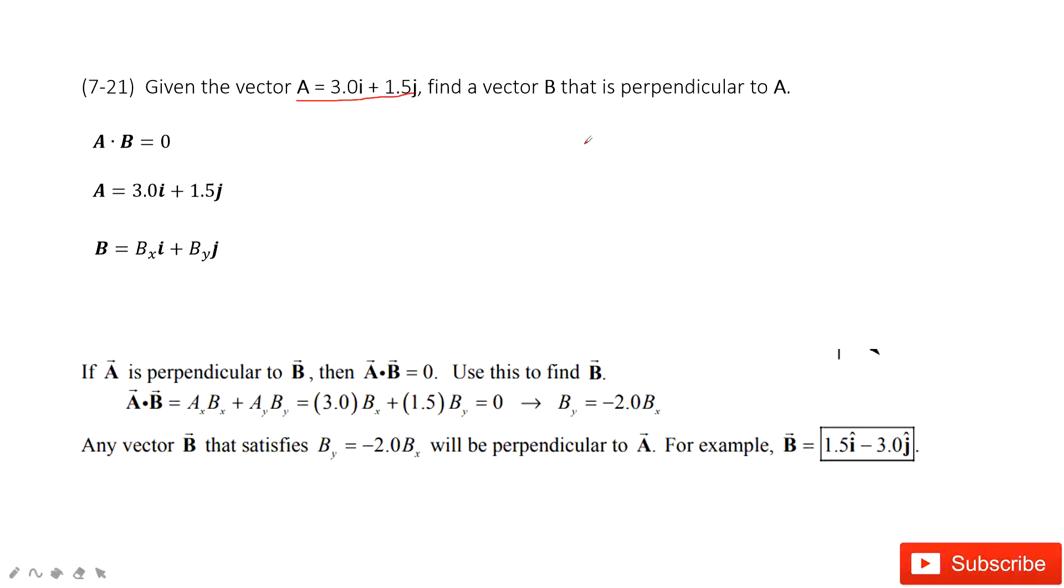In this chapter, we consider if A is perpendicular to B, that means the product A dot B must be zero. Because the angle theta is 90 degrees, cosine 90 degrees becomes zero. So A dot B is A magnitude times B magnitude, cosine theta, cosine 90 degrees, zero.